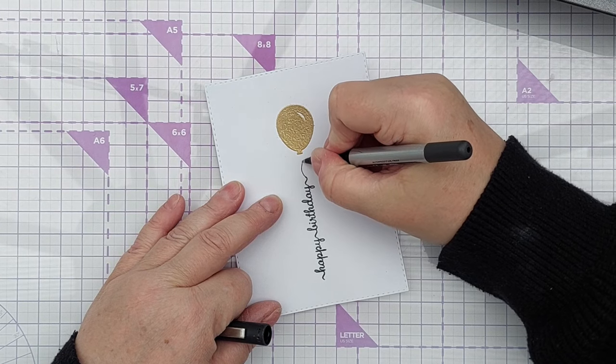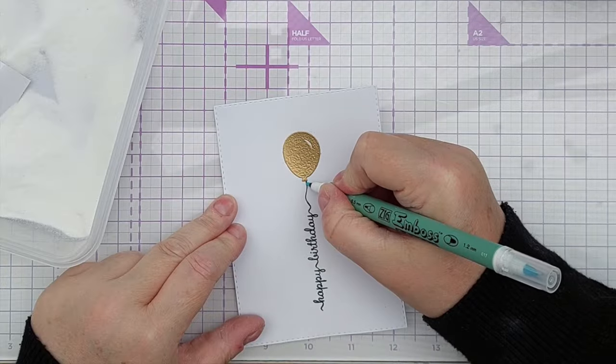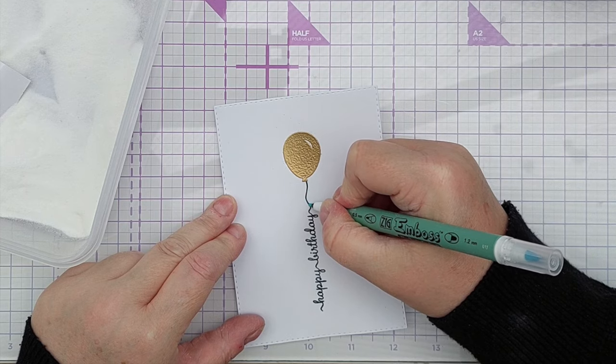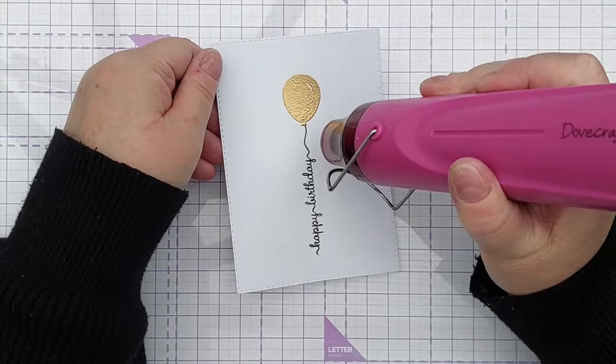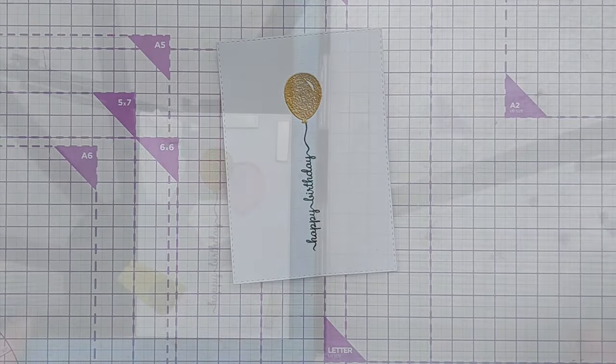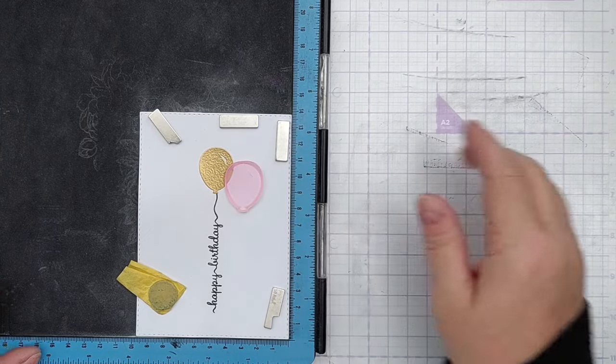Then I connected my gold balloon to the sentiment using a black pen, and then I used an embossing pen to draw over that and heat emboss that with clear embossing powder so the string of the balloon and the sentiment are all clear embossed.